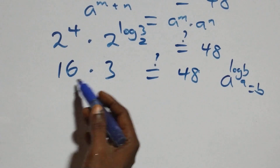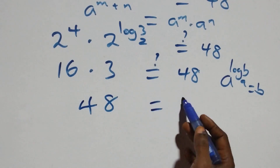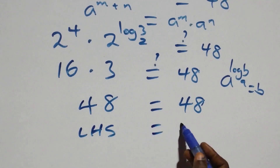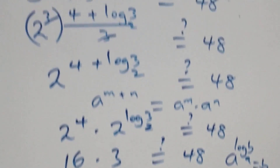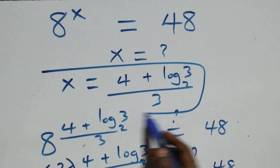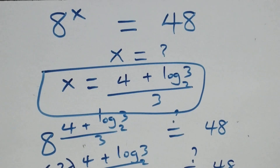16 × 3 = 48, which equals 48 on the right-hand side. Therefore the left-hand side equals the right-hand side, and we conclude that x = (4 + log₂3) / 3 satisfies the given problem. Thank you for watching — don't forget to subscribe for more videos, turn on the notification bell, share this video, give a thumbs up, and put your comment. See you next class!